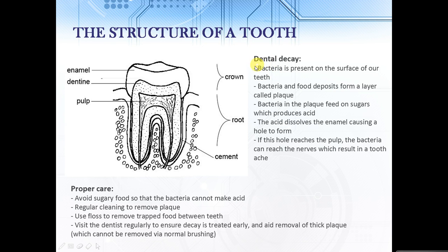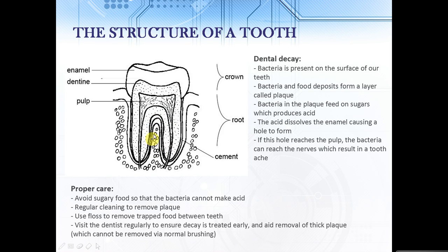How do we prevent dental decay? First of all, we want to avoid sugary food so that the bacteria can't make the acid in the first place. Regular cleaning is needed to remove the plaque, and you could use flossing to remove trapped food between the teeth that a normal toothbrush cannot reach. A regular dentist visit will allow you to treat decay earlier, which is better, and aid in removal of thick plaque which usually can't be removed just by brushing your teeth.